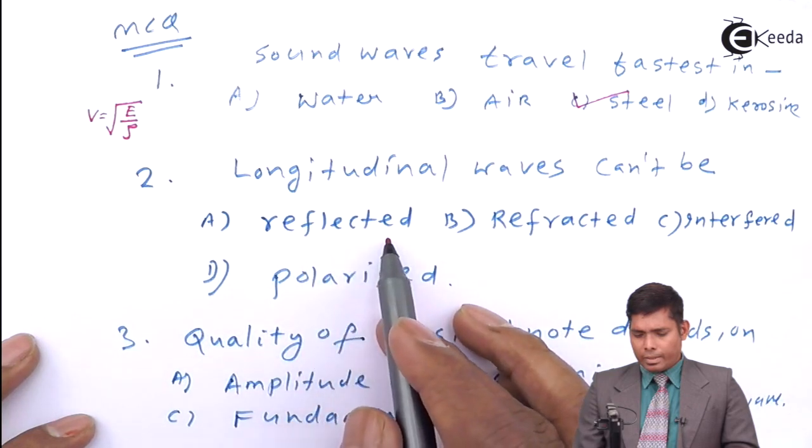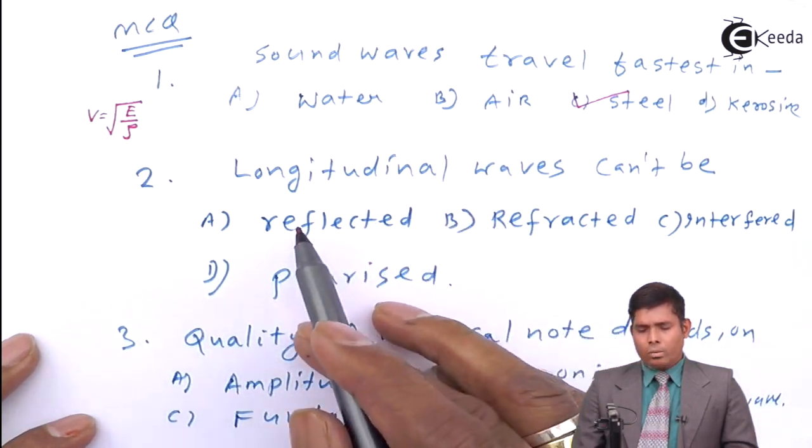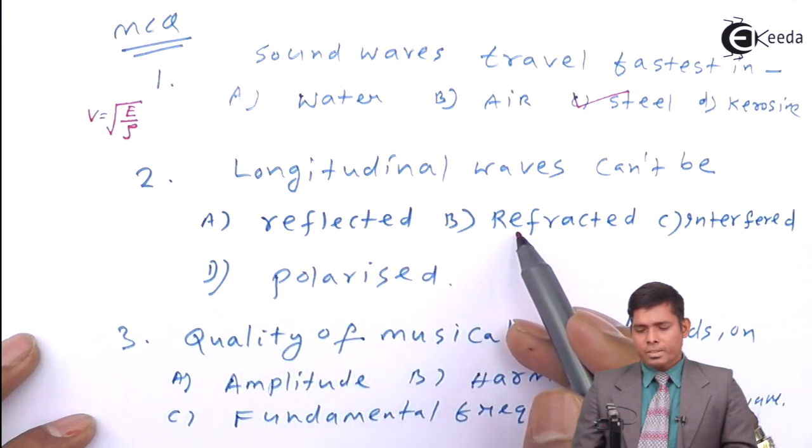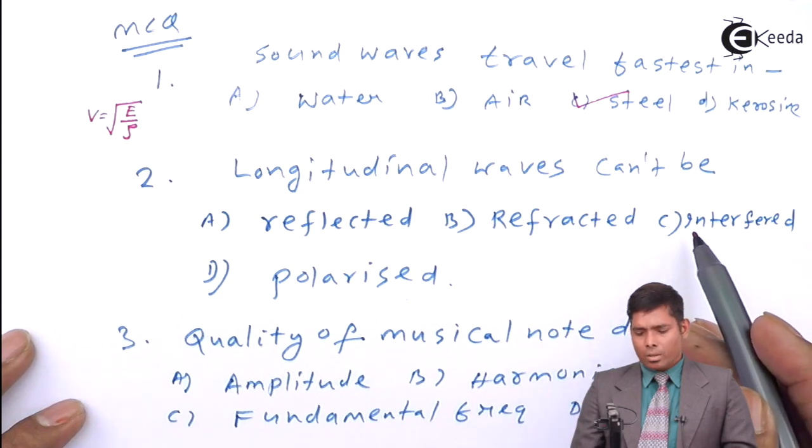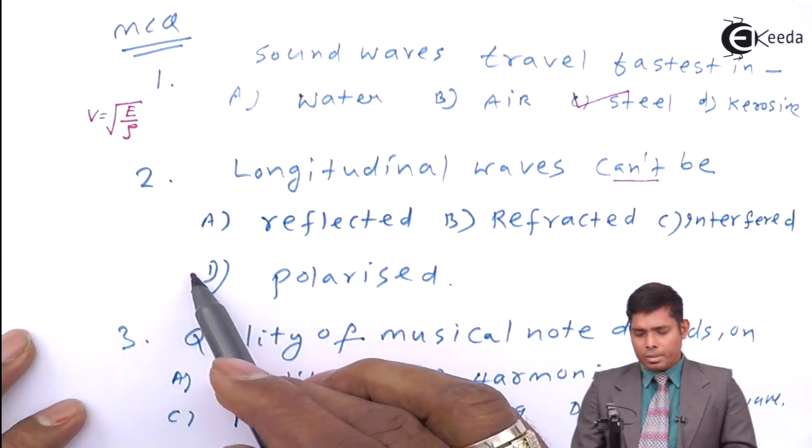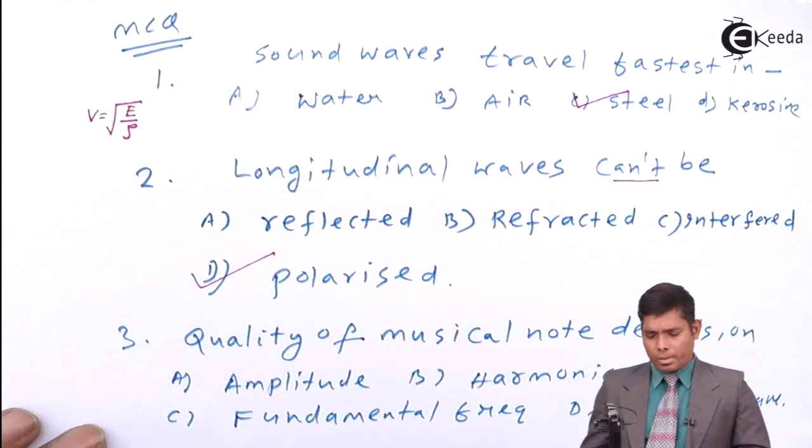Longitudinal waves cannot be reflected, refracted, interfered, polarized. All waves can be reflected, all waves can be refracted, can be interfered. So what it cannot be? Polarization is not possible in case of longitudinal wave because it is already polarized.